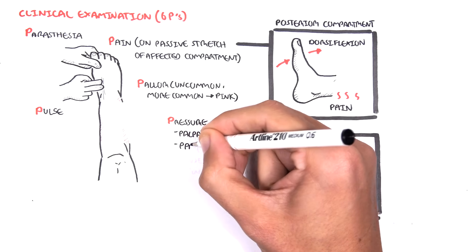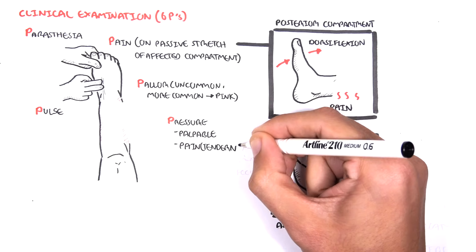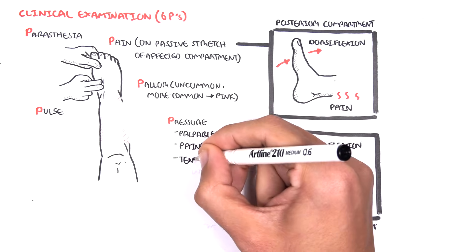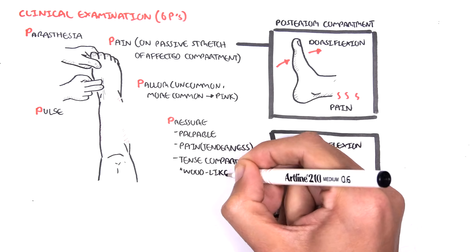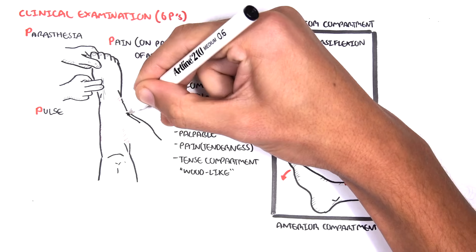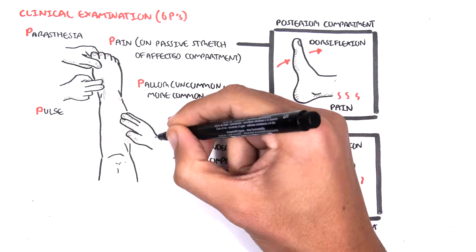The fifth P is pressure. Pressure includes pain when touching the affected limb. Also very important, patients with acute compartment syndrome are often described as feeling wood-like on palpation because of the increase in pressure.